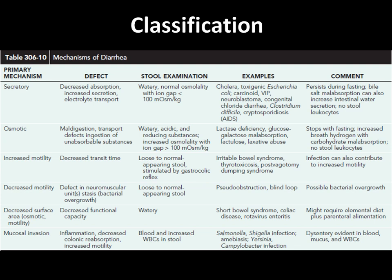In osmotic diarrhea, there is maldigestion, transport defect, and ingestion of unabsorbable substances. Good examples are lactase deficiency, glucose-galactose malabsorption, and laxative abuse. Osmotic diarrhea stops with fasting, there are no stool leukocytes, and increased breath hydrogen with carbohydrate malabsorption is also present.